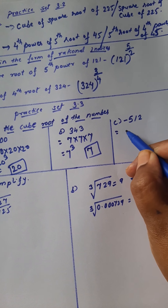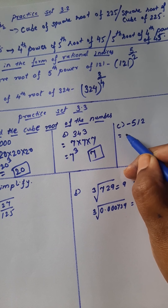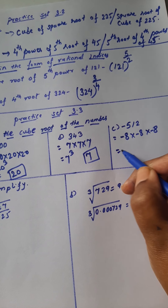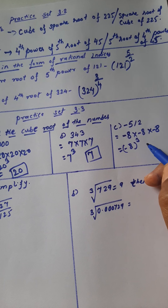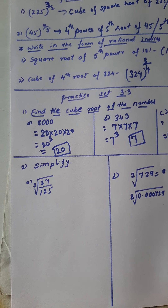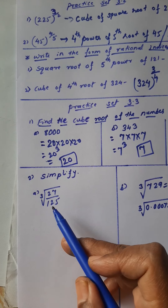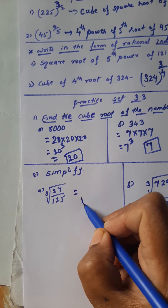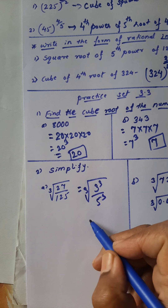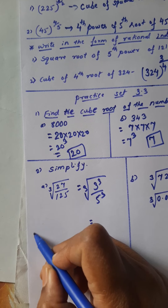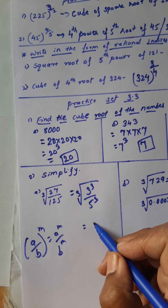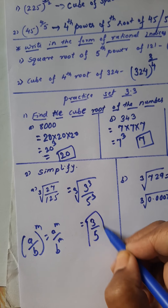Next, the cube root of minus 512. We give the minus sign to all numbers: minus 8 multiplied by minus 8 multiplied by minus 8 equals minus 512, so minus 8 is cubed. The answer is minus 8. Next, simplify the cube root of 27 upon 125. Now 27 is the cube of 3 and 125 is the cube of 5. Using the identity (a upon b) raised to m equals a raised to m upon b raised to m, the cube and the cube cancel, giving the answer 3 upon 5.